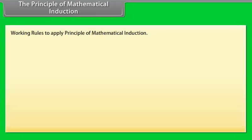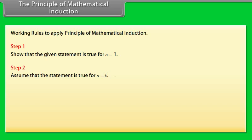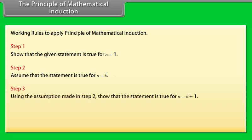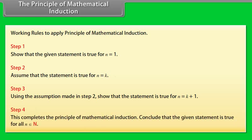Working rules to apply the principle of mathematical induction. Step 1: Show that the given statement is true for n = 1. Step 2: Assume that the statement is true for n = k. Step 3: Using the assumption made in Step 2, show that the statement is true for n = k + 1. Step 4: This completes the principle of mathematical induction. Conclude that the given statement is true for all n belonging to N.